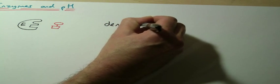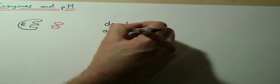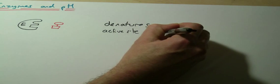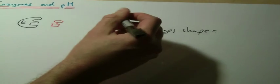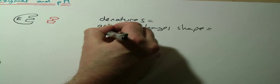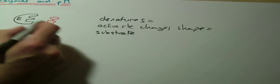Which means the active site changes shape, which means that the substrate, the substance that the enzyme is either making or breaking down, substrate no longer fits the active site.